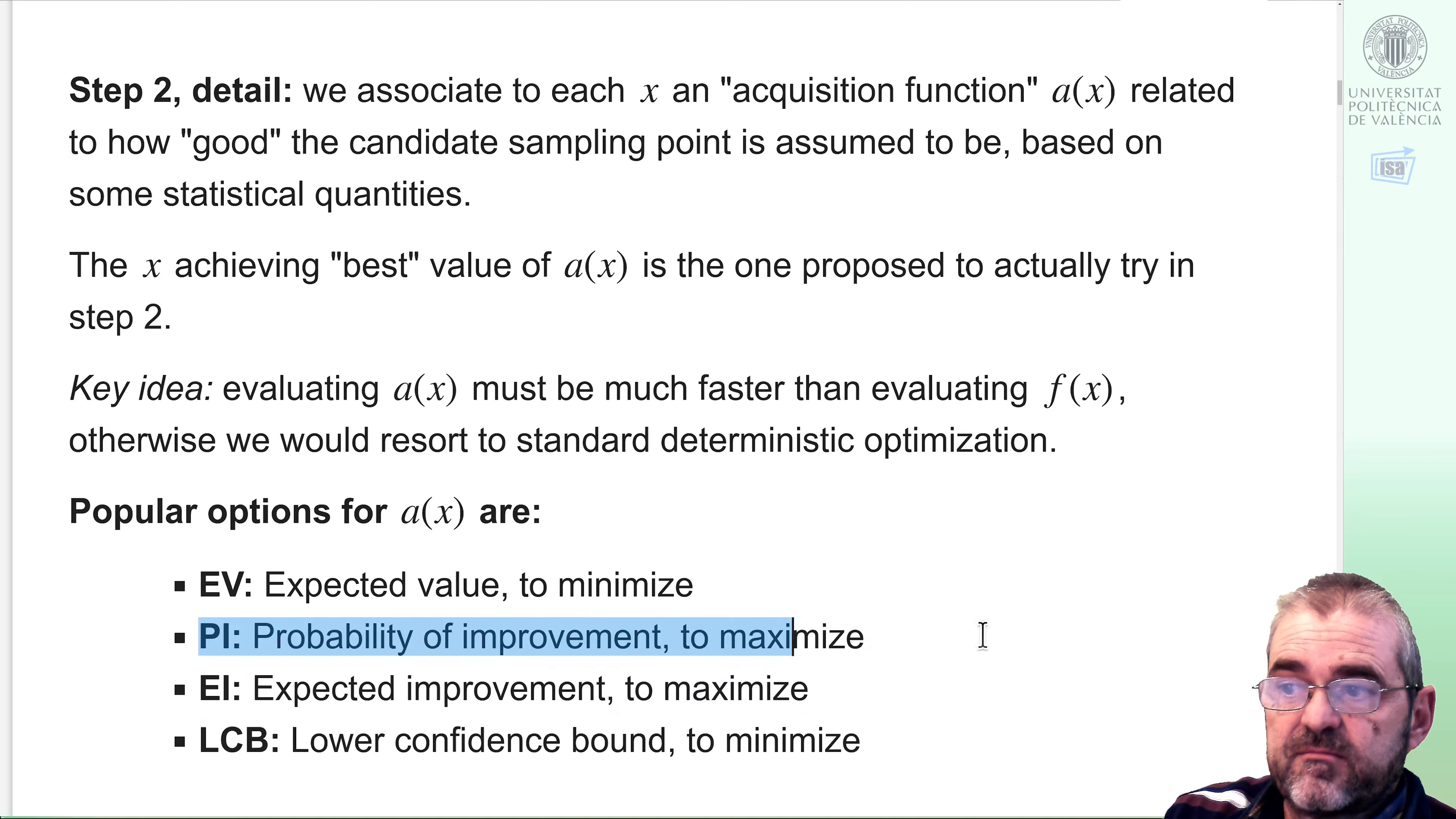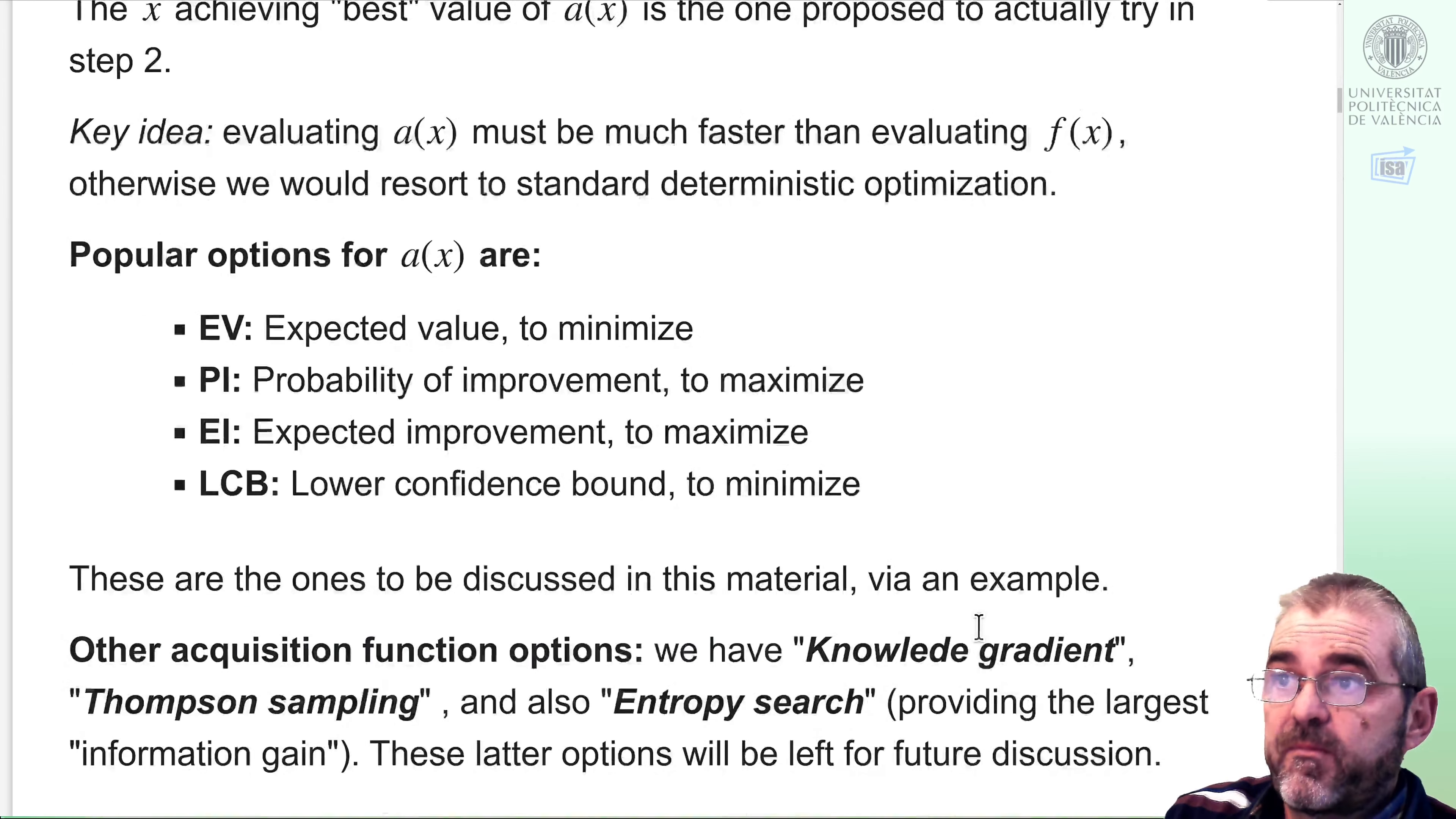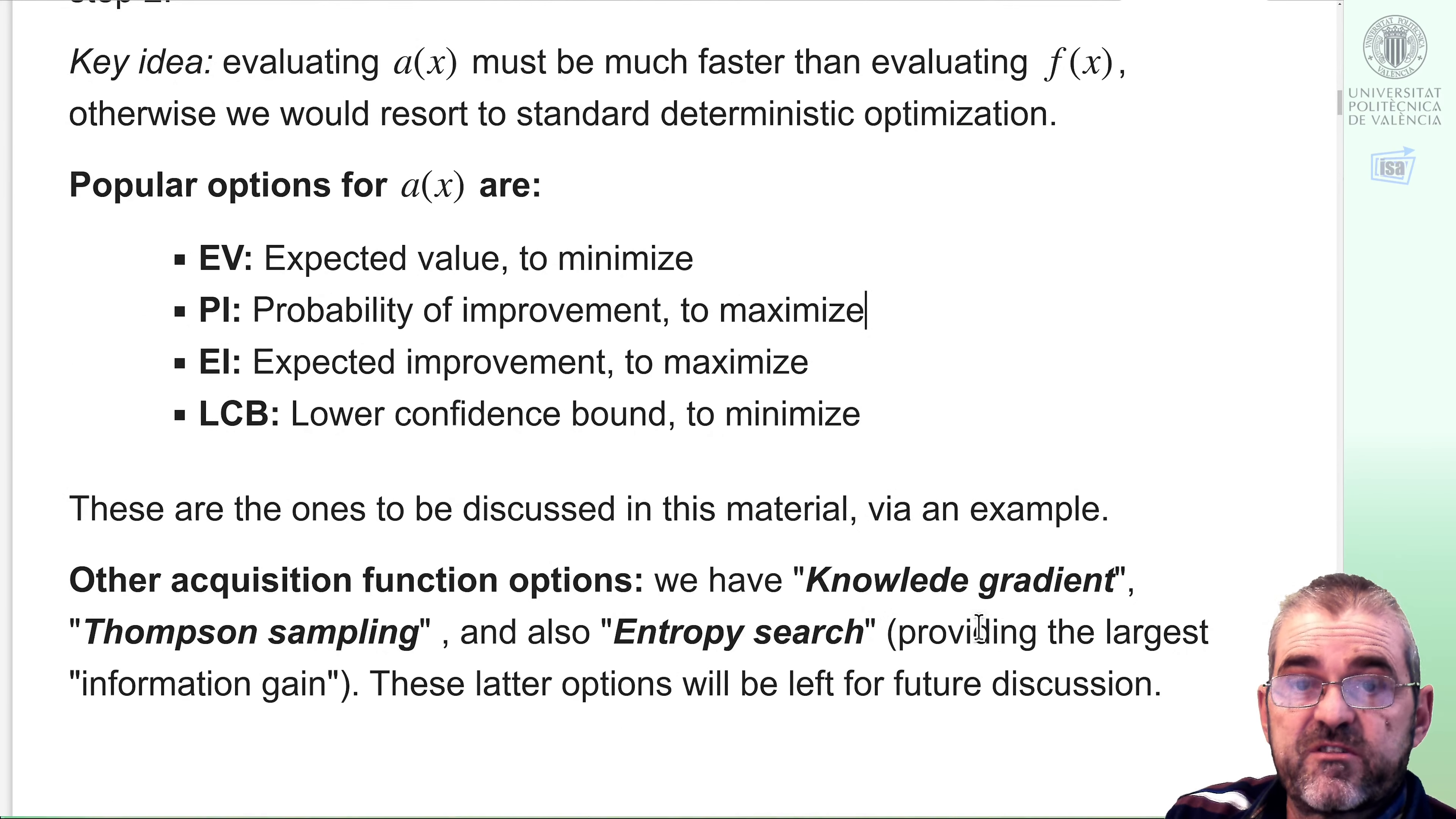Understanding the meaning of the probability of improvement will be the goal of the second part of this video, once we set up an example to illustrate what these things mean. There are other acquisition functions that require more sophisticated concepts, and those ones are usually left out of introductory Bayesian optimization materials.